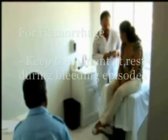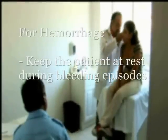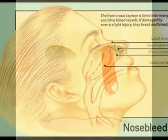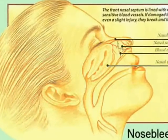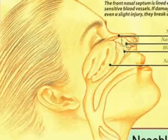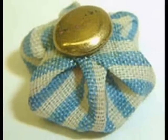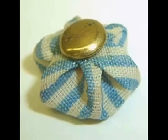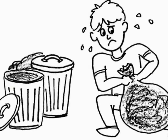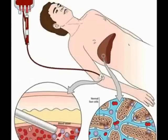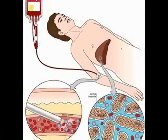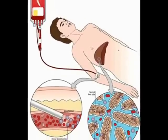For hemorrhage, keep the patient at rest during bleeding episodes. For nose bleeding, maintain an elevated position of the trunk and promote vascular constriction in the nasopharyngeal membrane by applying an ice pack over the forehead. For melena, apply an ice pack over the abdomen. Avoid unnecessary movement. If a transfusion is given, support the patient during the therapy.